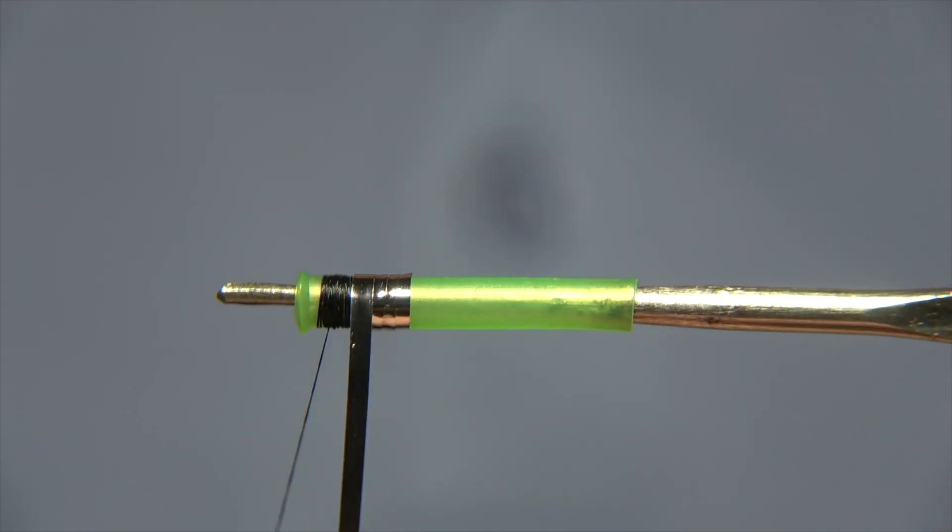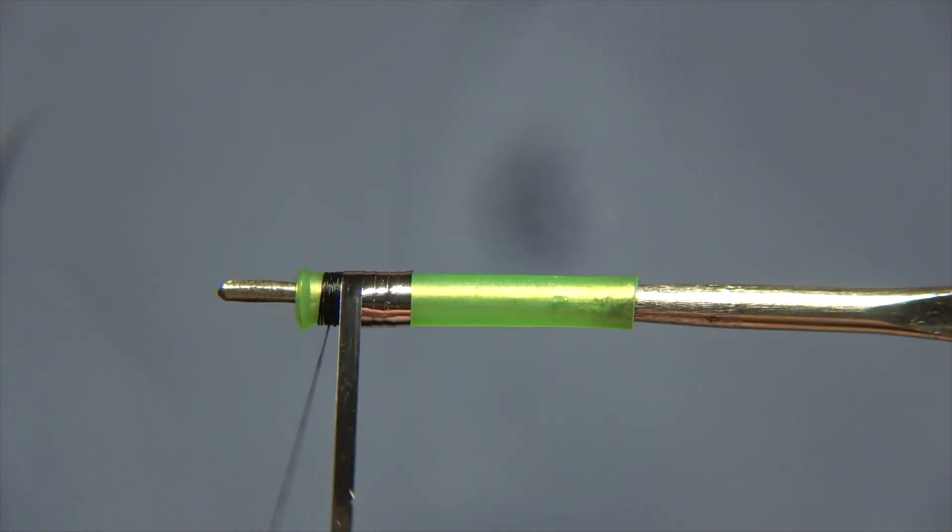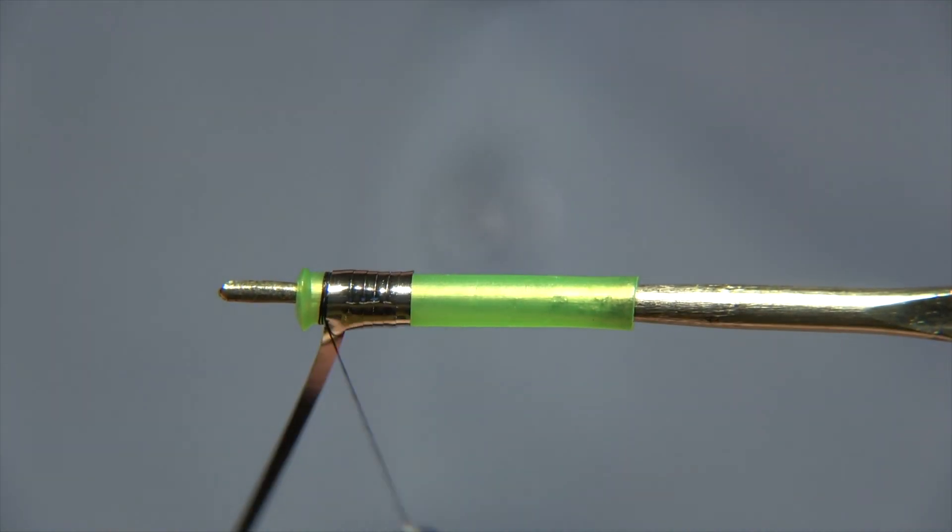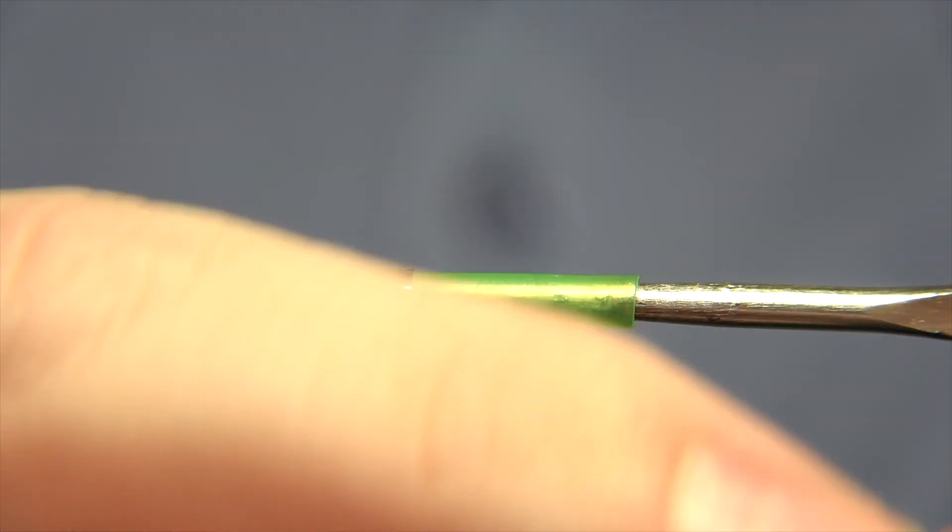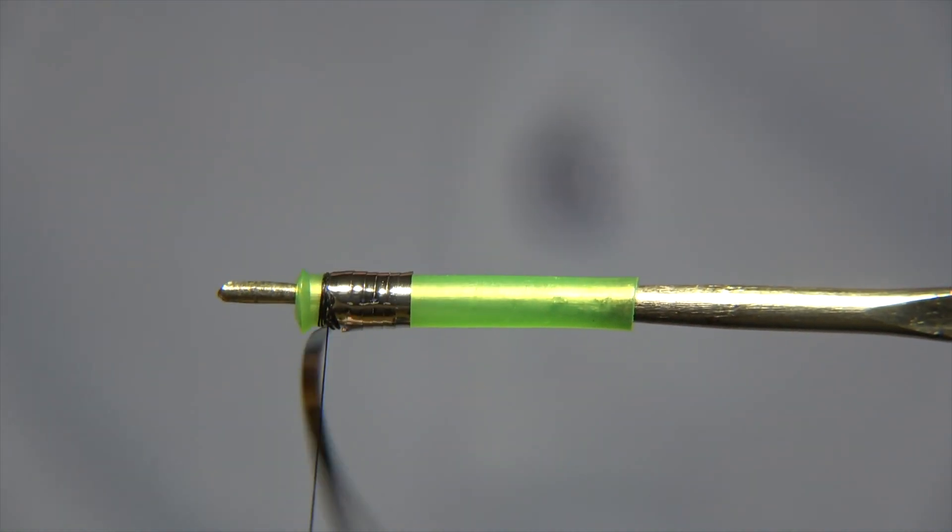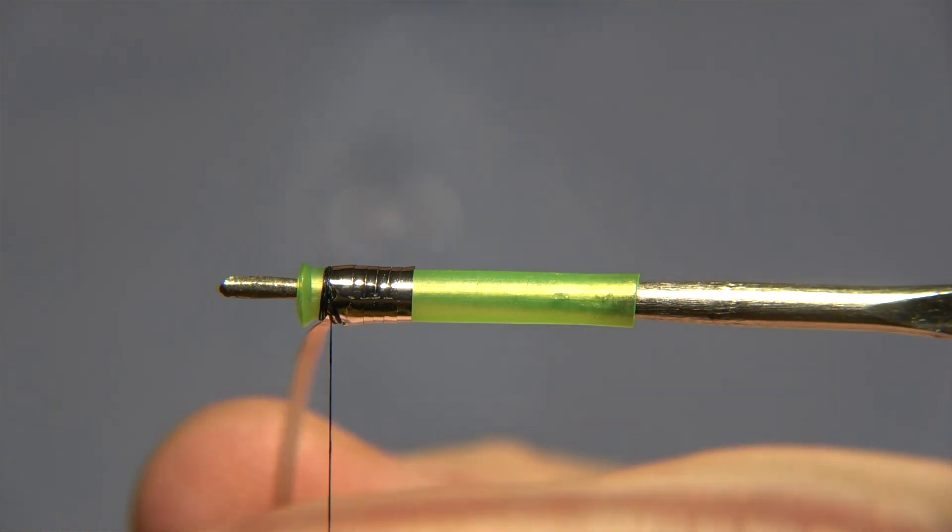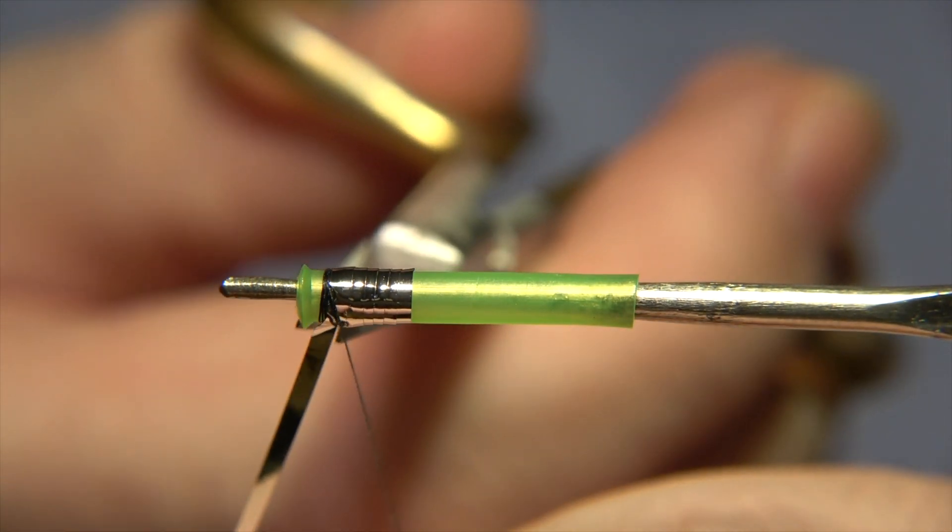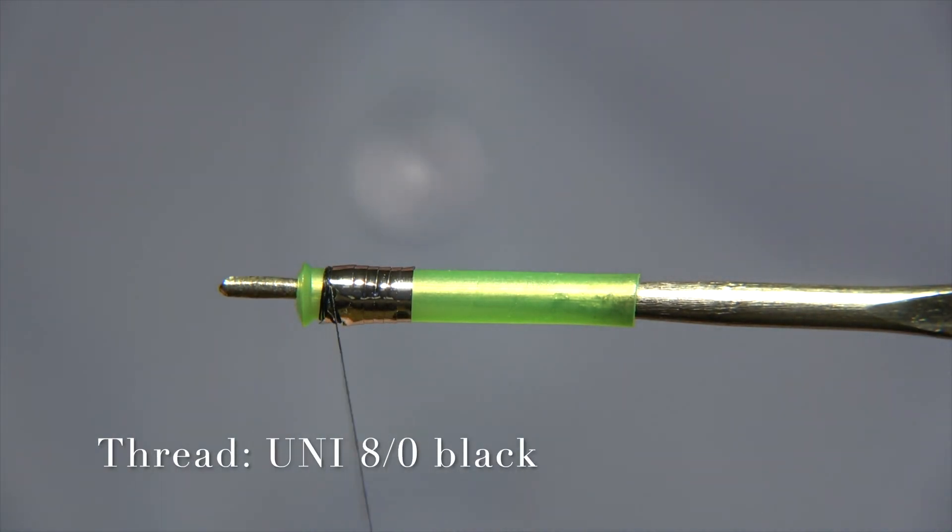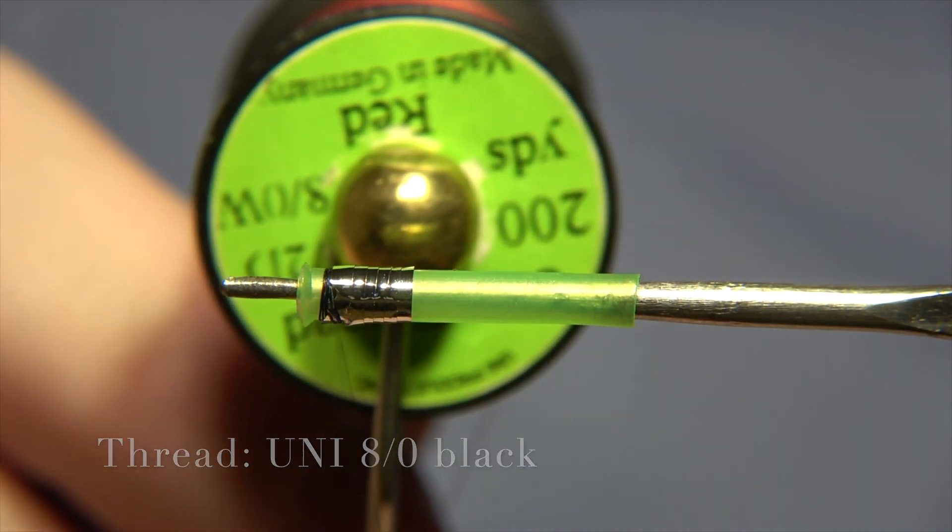Then we're going to grab it with our thread there and lock it down securely, something like that, and that's the body of the fly. The length of the tube is something which is different from angler to angler, how they prefer the tube to be.